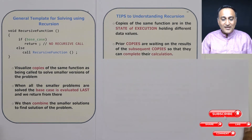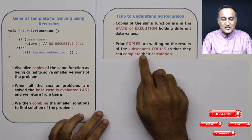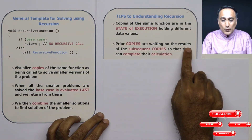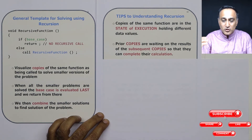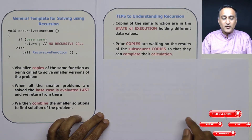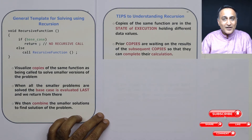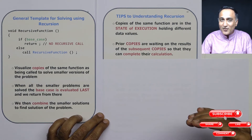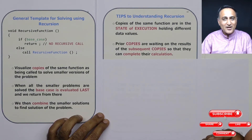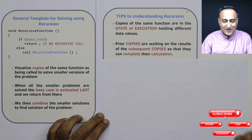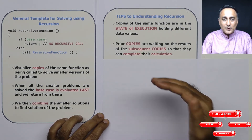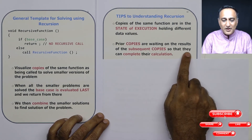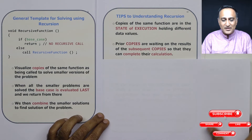An important point where students generally make mistakes is that the earlier copies are always going to wait for results from the future copies to complete their calculation. For example, 5 factorial is waiting for 4 factorial, 4 factorial is waiting for 3 factorial, 3 factorial is waiting for 2 factorial, and 2 factorial is waiting for 1 factorial. When 1 factorial is calculated, I get 2 factorial; when 2 factorial is calculated, I get 3 factorial, and so on up to 5 factorial. The older copies are waiting for the newer copies to complete their calculation.